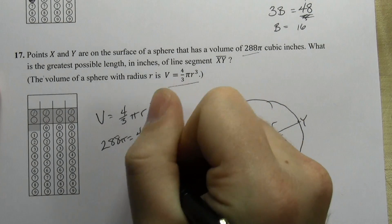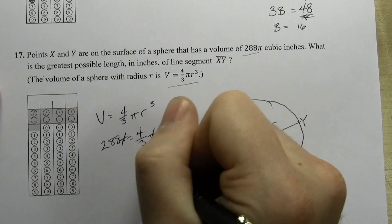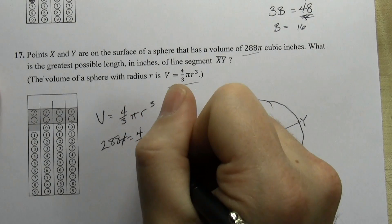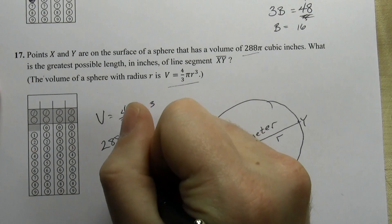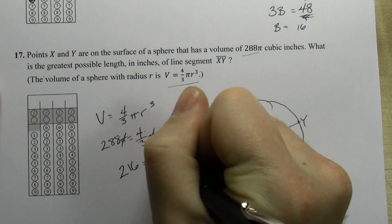And 288π equals 4/3 π r³. The π's drop out. Divide 288 by 4/3, and we get 216. So 216 equals r³.